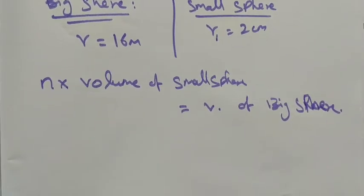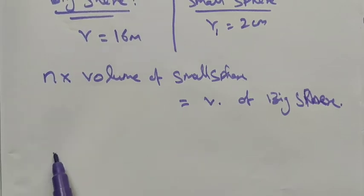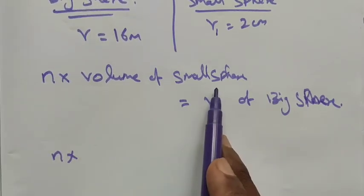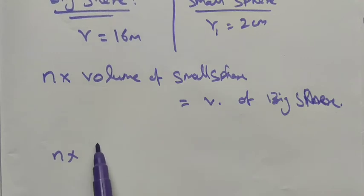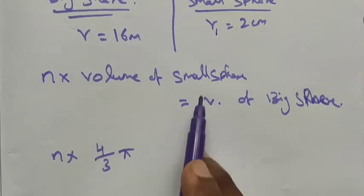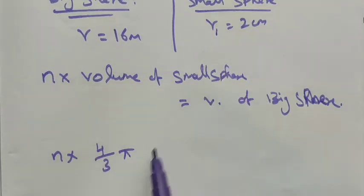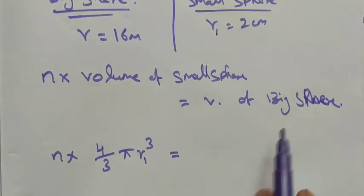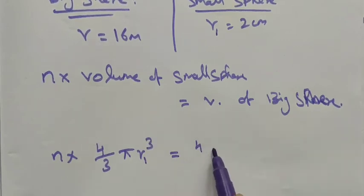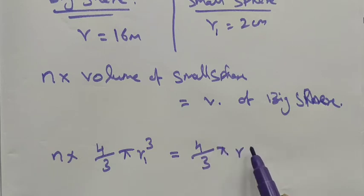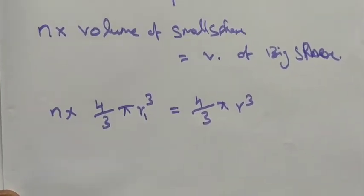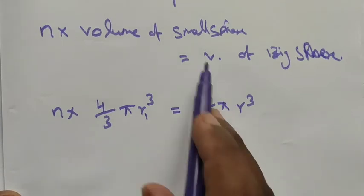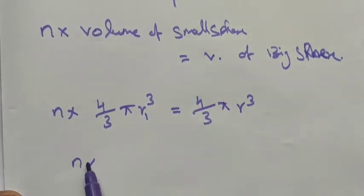The volume of the bigger one: n into volume of the sphere — the formula is four by three pi r cubed. So n into four by three pi r1 cubed is equal to the volume of the bigger sphere, which is four by three pi R cubed cubic units.